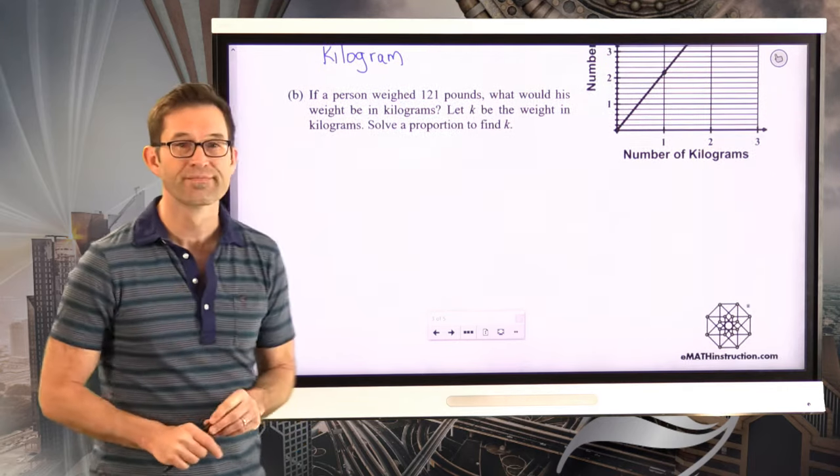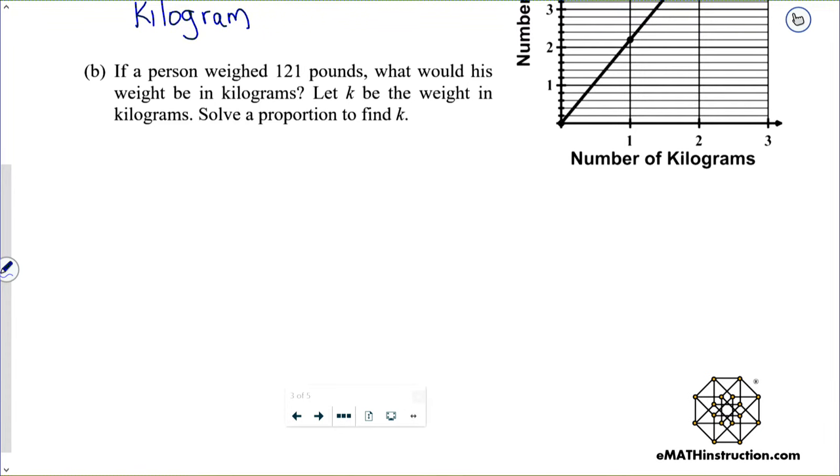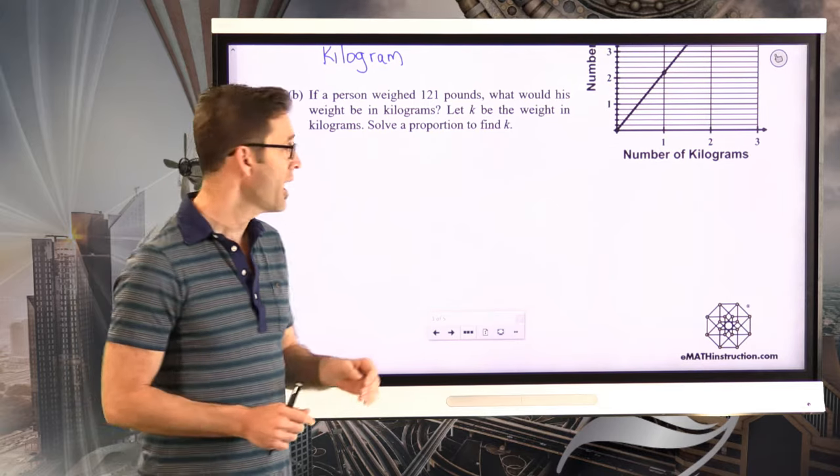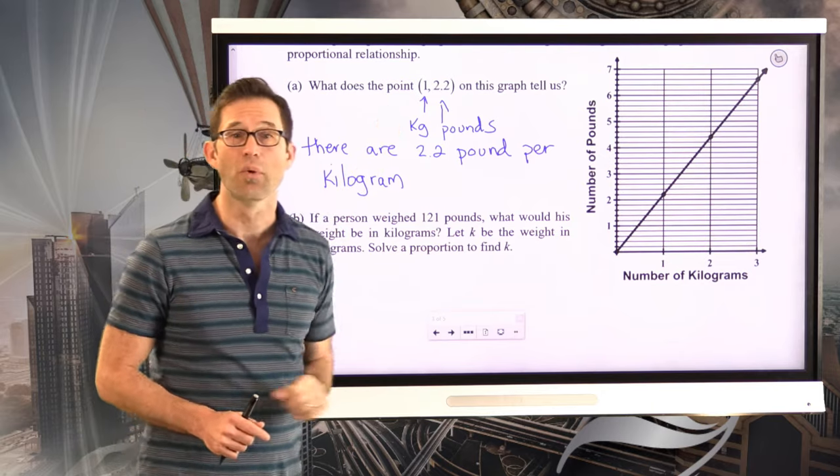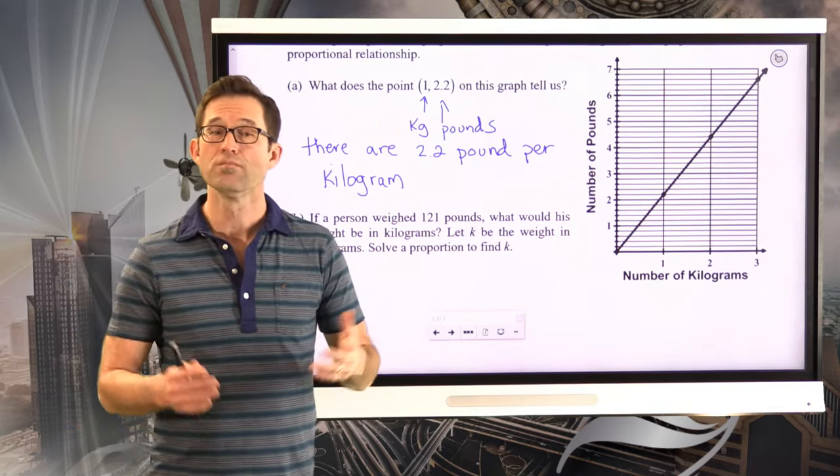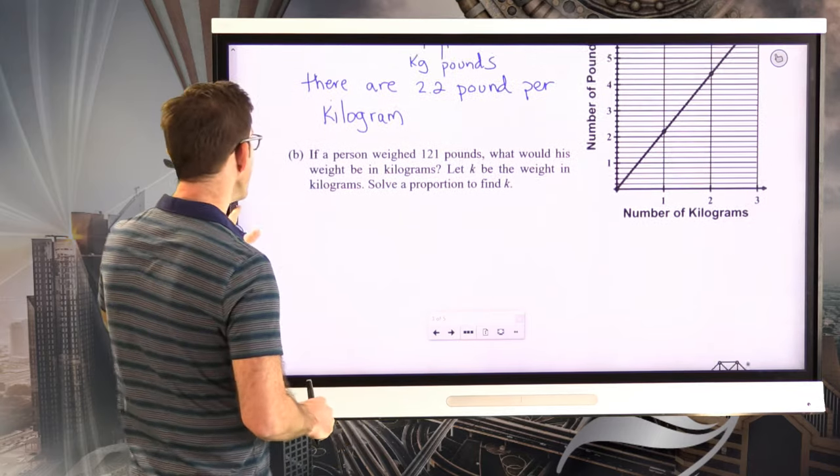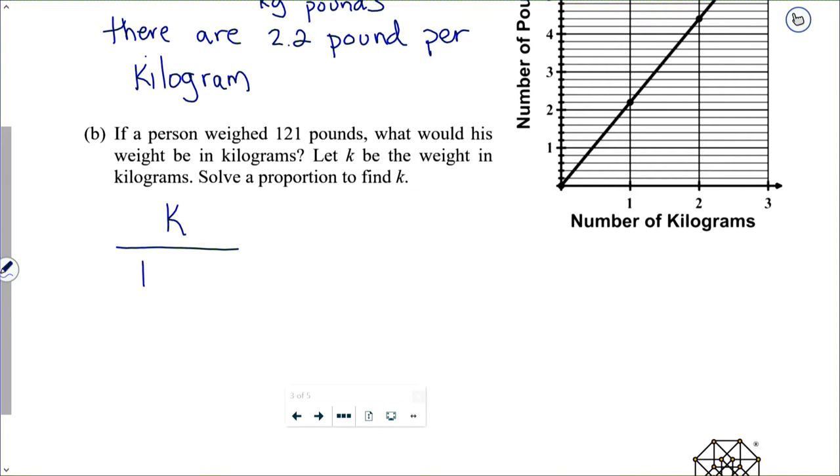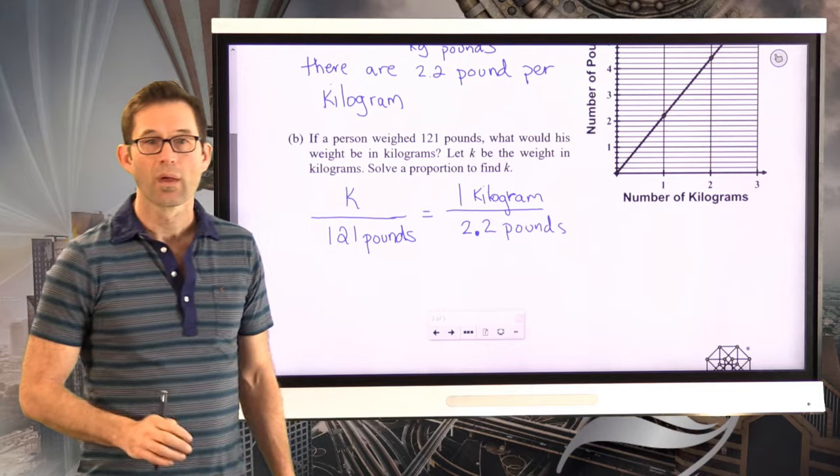Let's take a look at letter B. If a person weighed 121 pounds, what would his weight be in kilograms? Let K be the weight in kilograms, solve for proportion, define K. All right. So this is pretty easy. We have one point on that proportion, which is 1 comma 2.2, and we know we have 121 pounds. So here's how I might go about doing that. I might say, well, if K is my kilograms and I have 121 pounds, and again, I definitely suggest carrying these units along, then we can use that unit rate we just saw, 1 kilogram to 2.2 pounds.